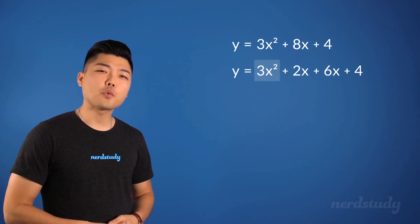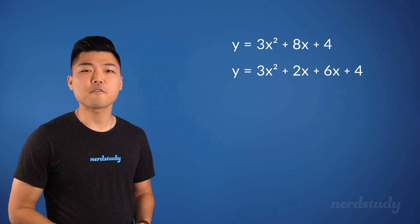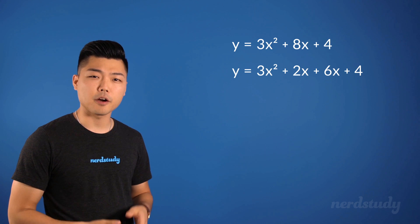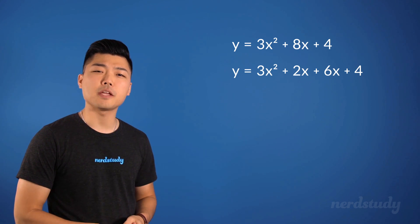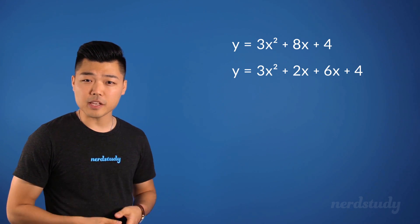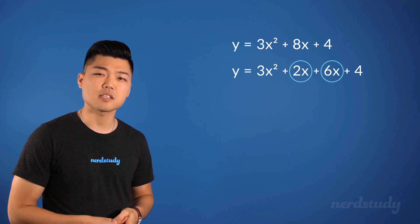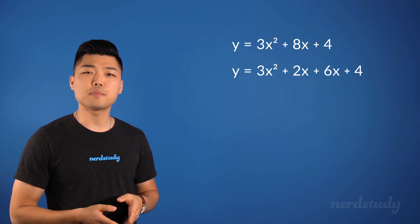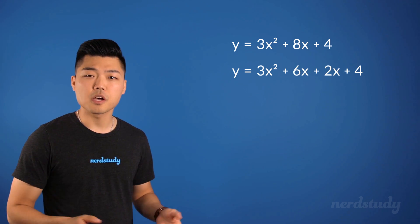Now we know that between 3x squared and 2x, we cannot factor out any number. And our objective is to factor out a number and an x variable. So instead of making it 2x plus 6x, let's rearrange it to be 6x plus 2x.